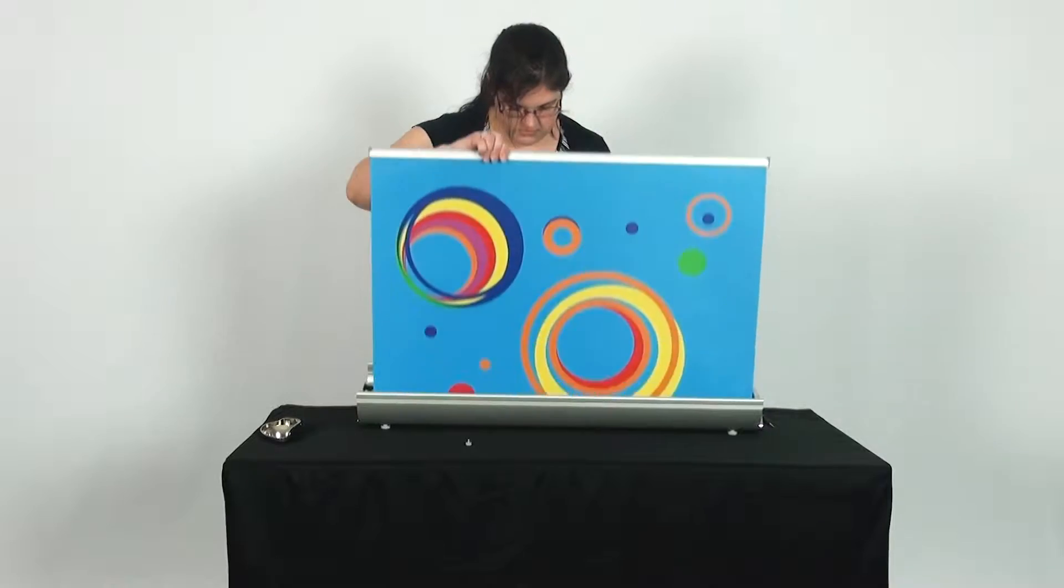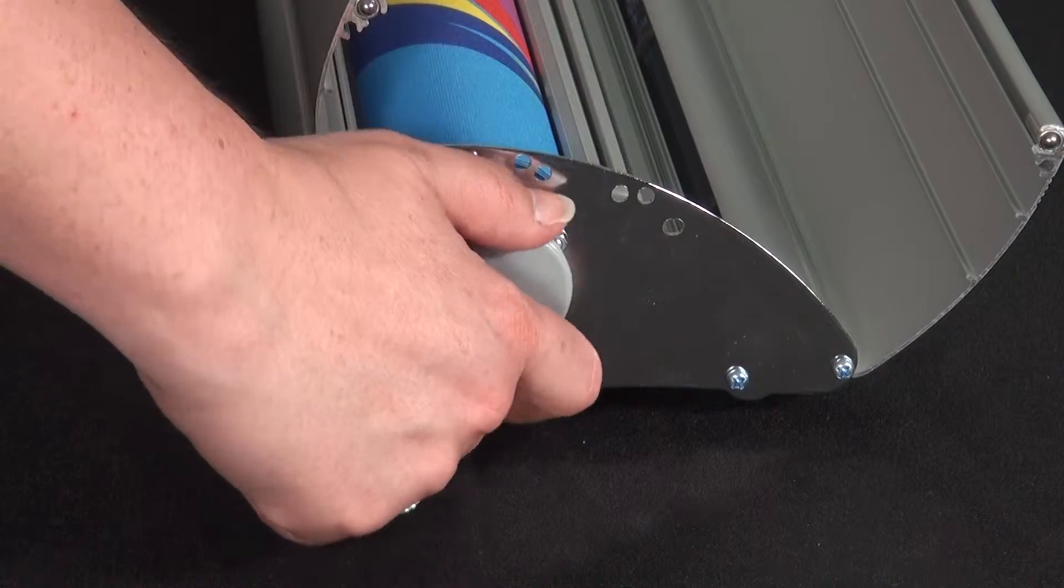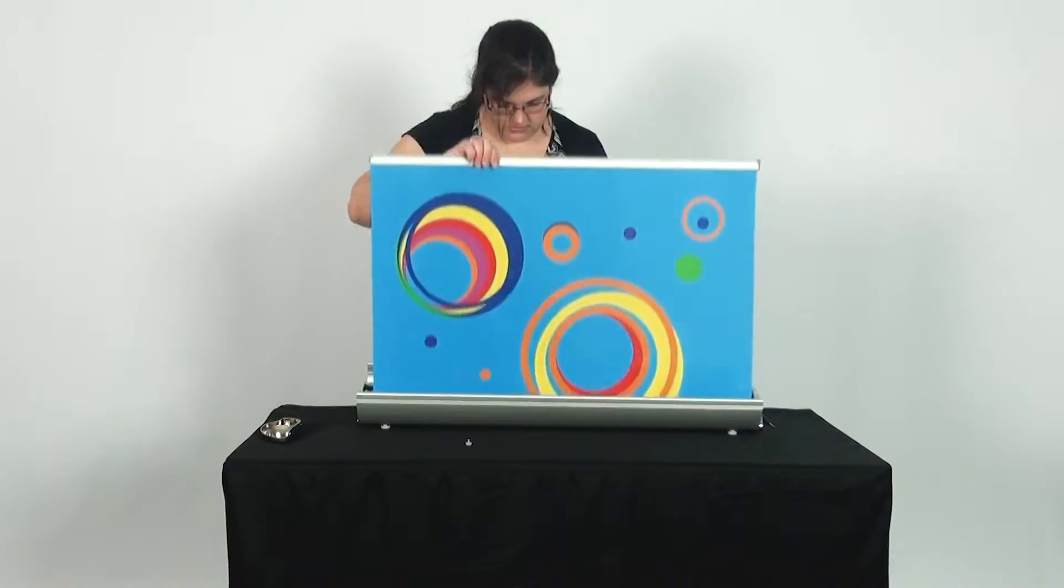You can test out the adjusted tension by rolling the print in and out of the base. If the tension is not enough you may go back to the tension knob and turn it clockwise again.